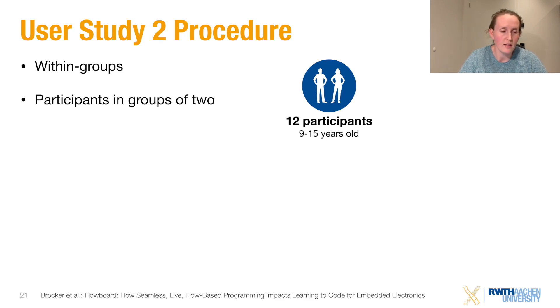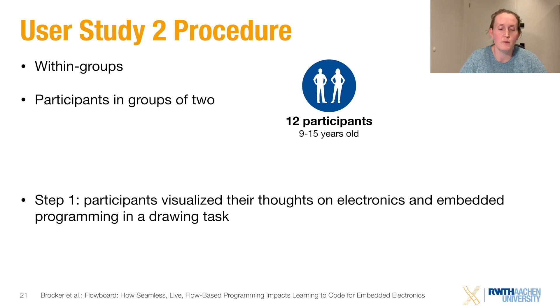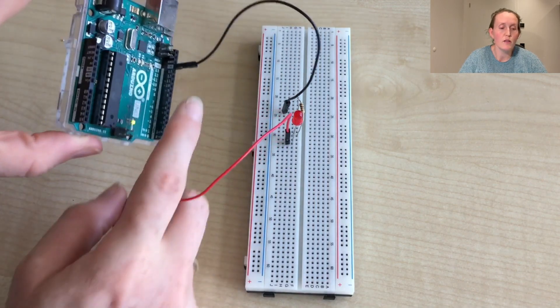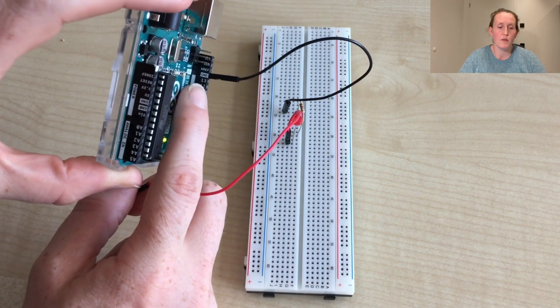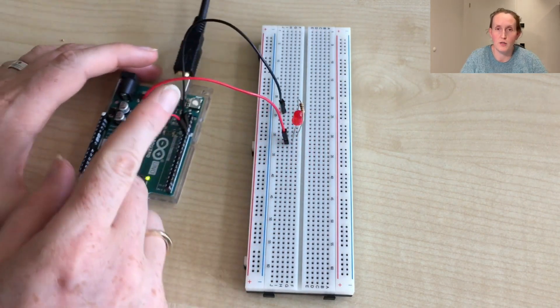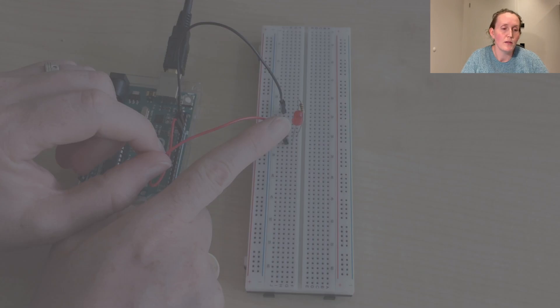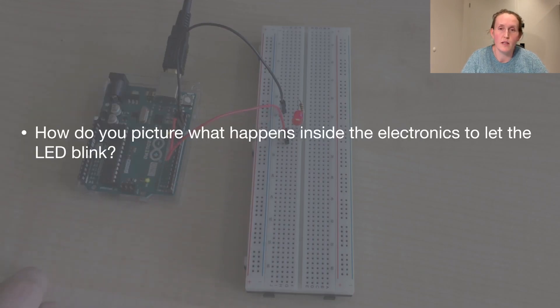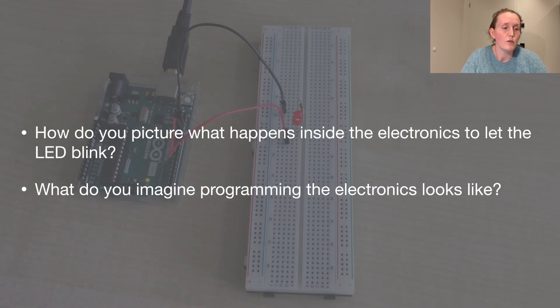We had four steps in the study. In the first one, we asked the participants to draw a picture of what they had in mind when thinking about electronics and programming them. The participants saw a tutorial video about how to blink an LED with an Arduino. And then we asked them to draw their thoughts on two questions: How do you picture what happens inside the electronics to let the LED blink? And what do you imagine programming the electronics would look like? With these questions, we wanted to get an understanding of the students' mental models.